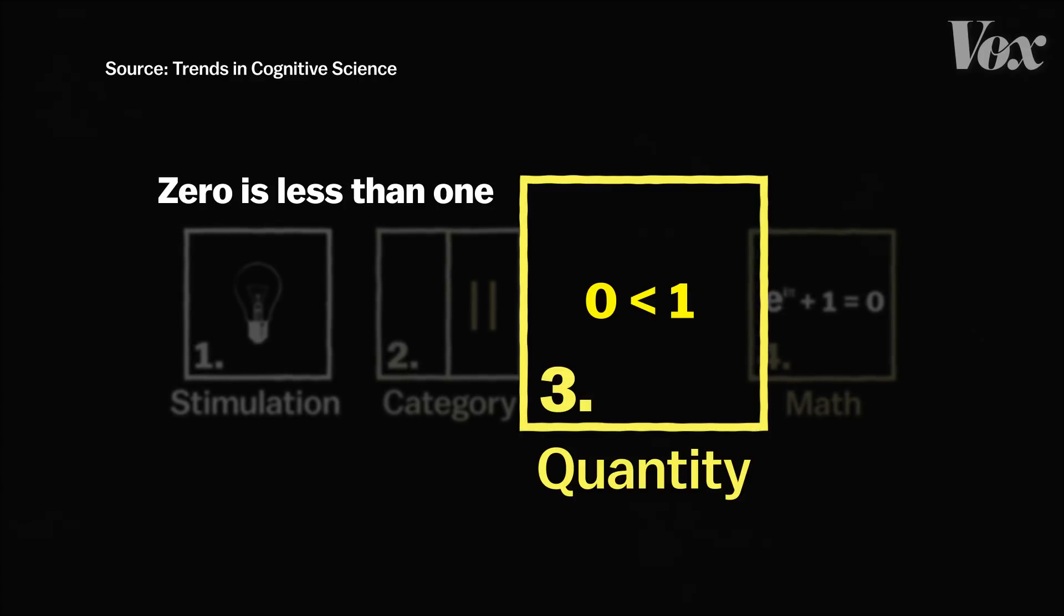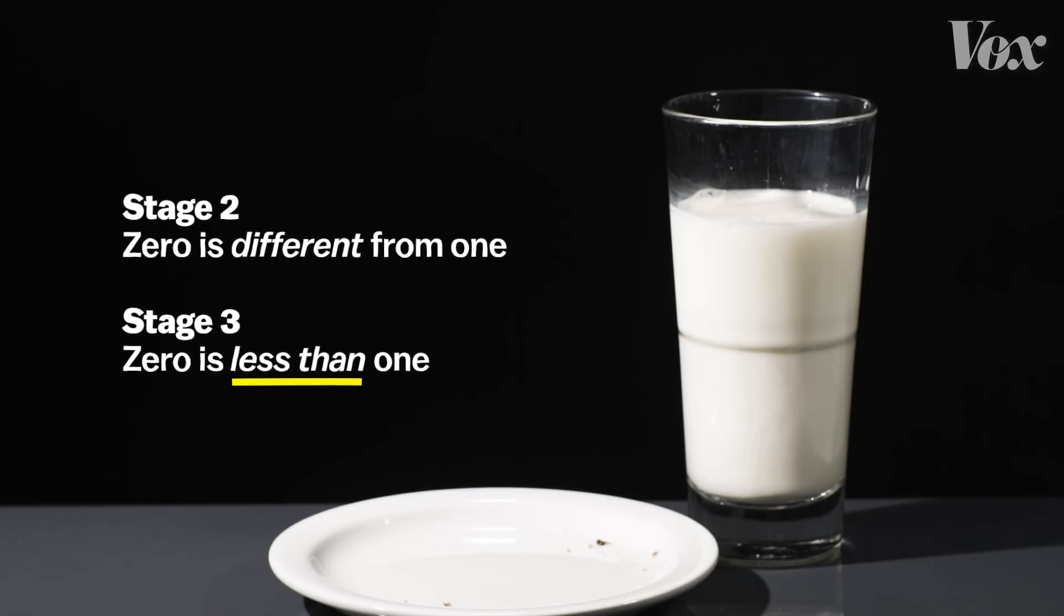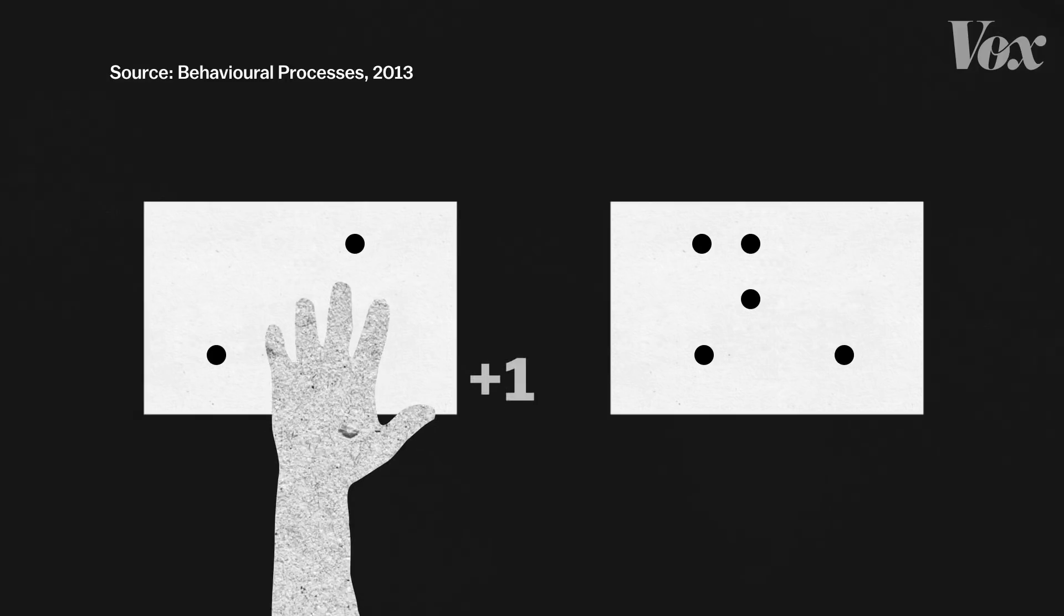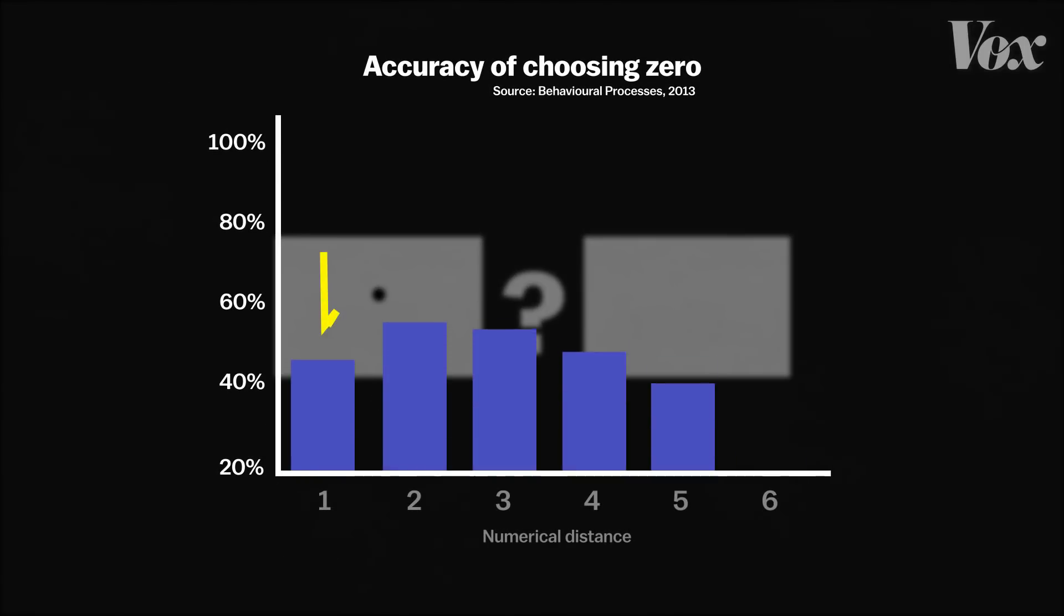Because even when a toddler can understand that zero represents something, like the absence of a cookie, they still don't understand that it represents an actual quantity. In an experiment with four-year-olds, researchers asked the toddlers to pick cards with the fewest dots, and when they compared a blank card and a card with one dot, less than half the kids got the answer right.